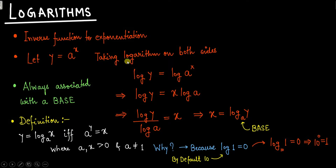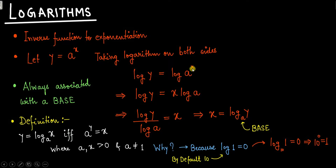If you take logarithm on both sides of y = aˣ, we can write log y equals to log of a to the power of x. On the left hand side we have log y, and on the right hand side log of aˣ. Now this implies log y equals to — and the rule is that whatever is in the power gets multiplied.